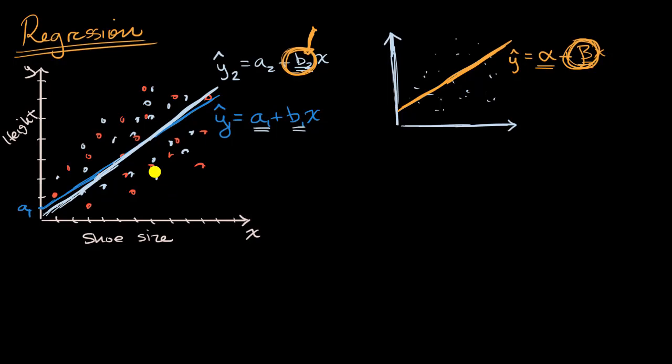In a previous video, we began to think about how we can use a regression line, and in particular, the slope of a regression line based on sample data, how we can use that in order to make inference about the slope of the true population regression line.